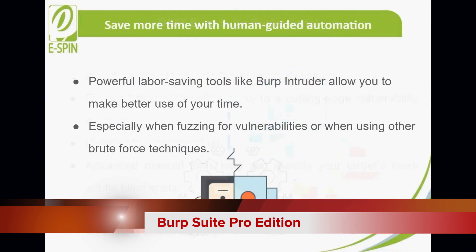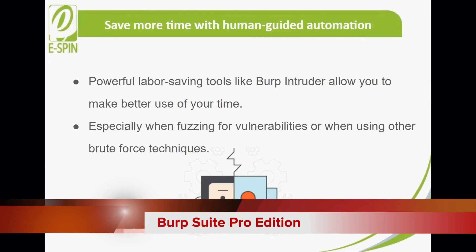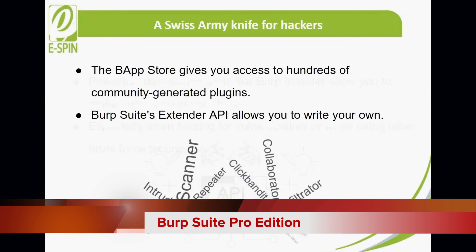Their pen testing tools will make your job faster while keeping you informed of the very latest attack vectors. Save more time with human-guided automation. You can't find every web security vulnerability using purely automated tools — many require some form of human input — but exploiting such vulnerabilities can often be a wearisome task. Powerful time-saving tools like Burp Intruder allow you to make better use of your time, especially when fuzzing for vulnerabilities or when using other brute force techniques.